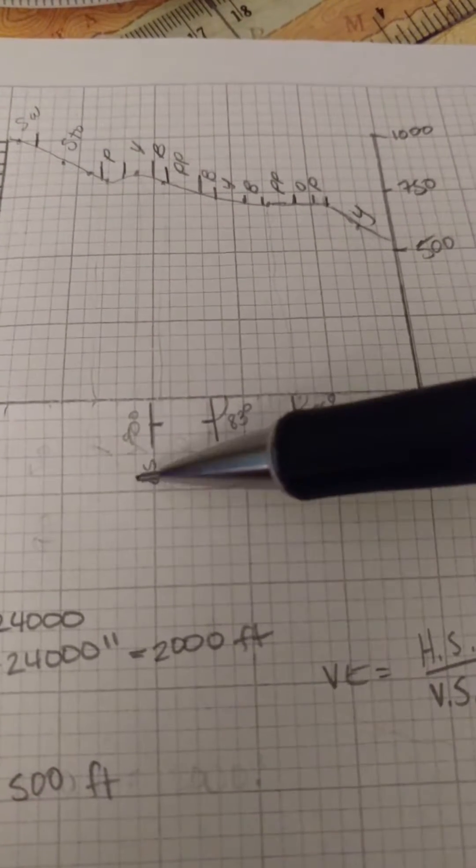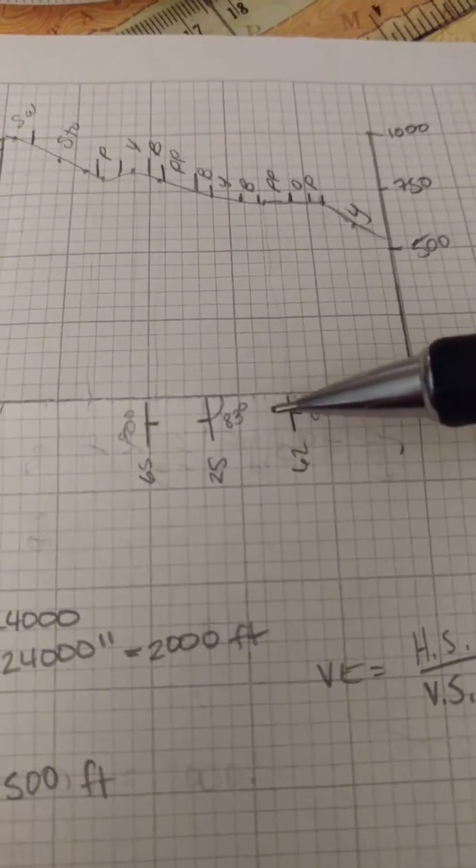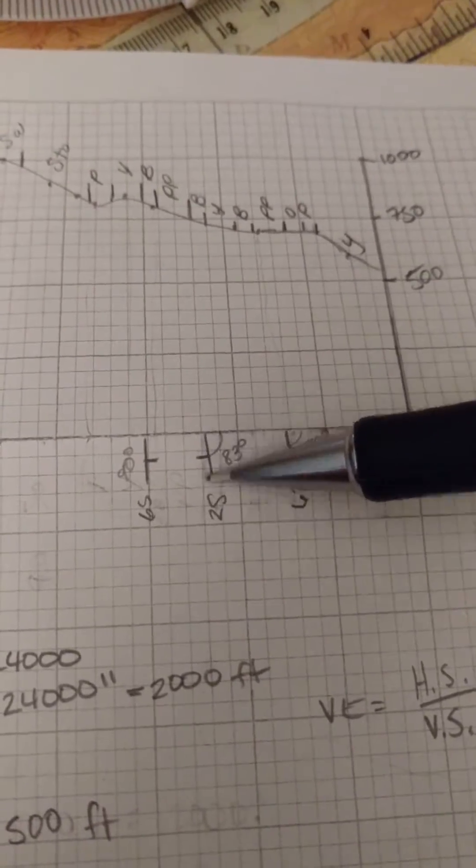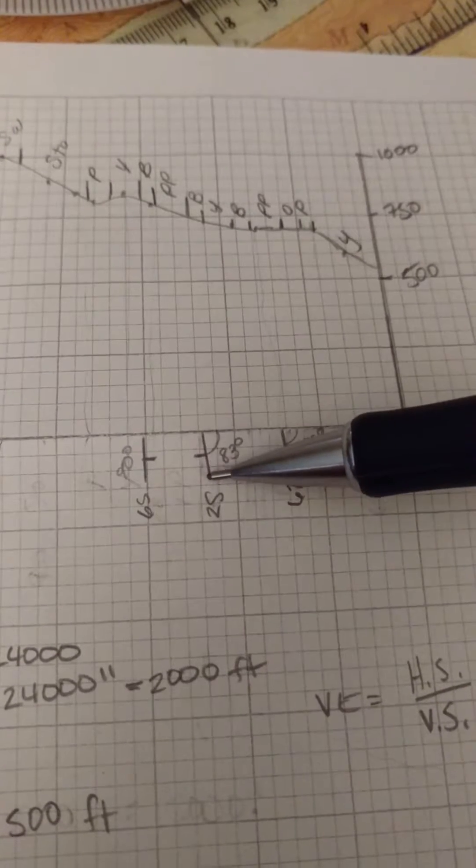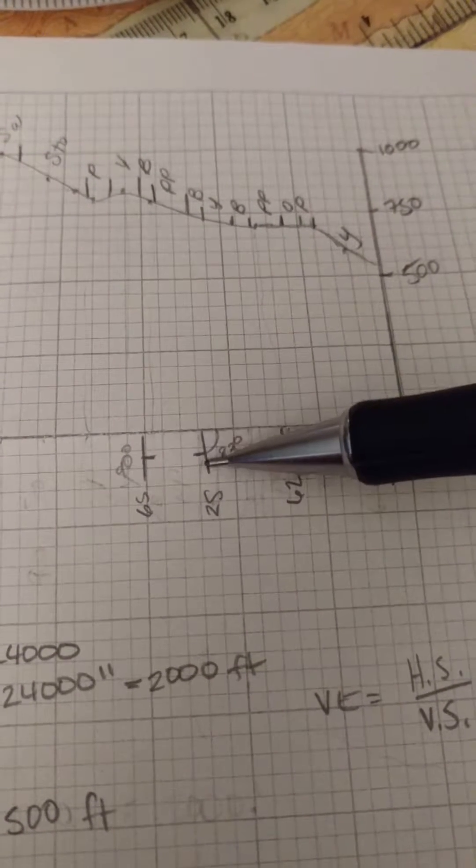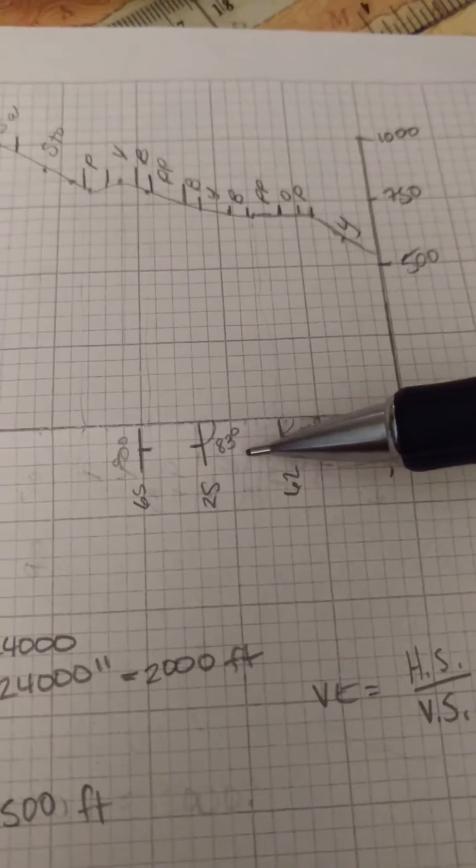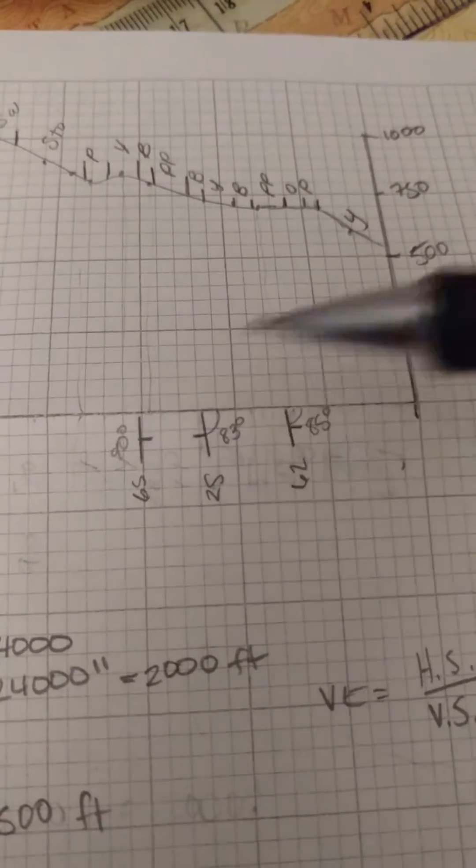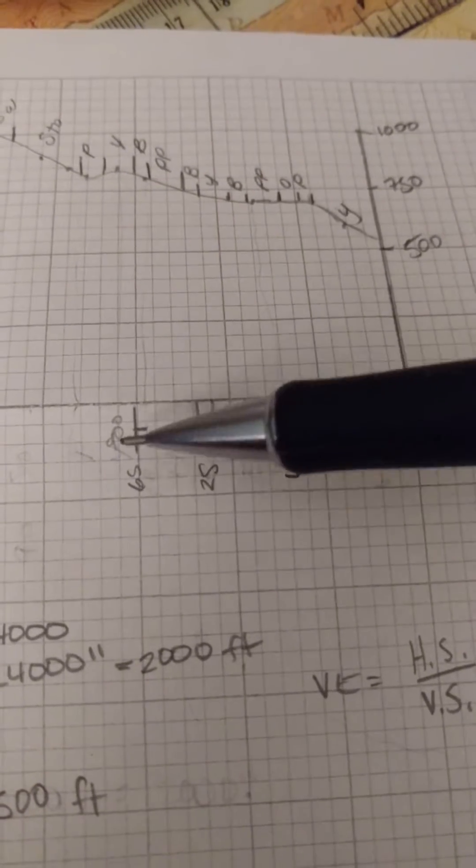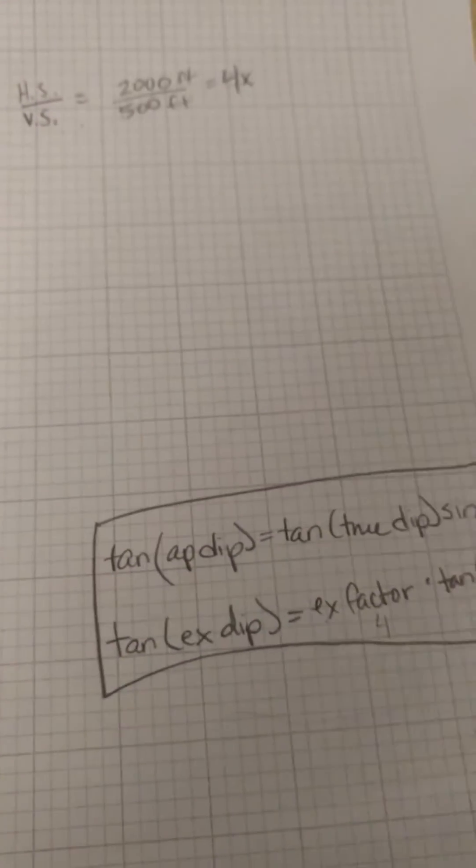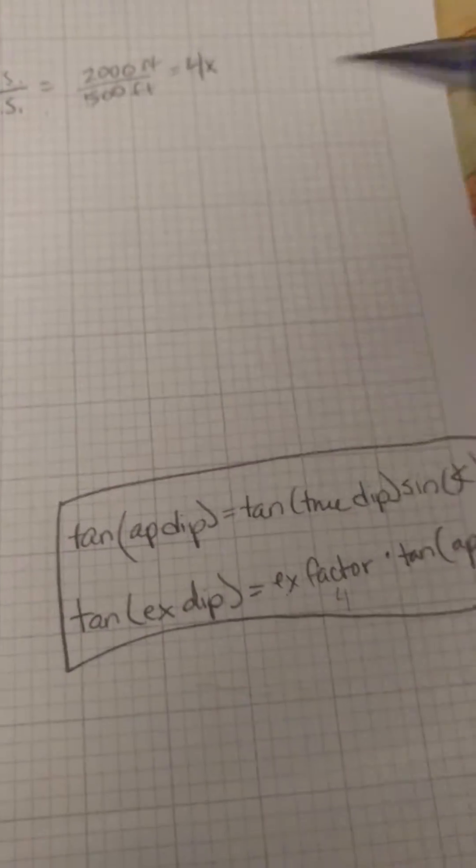These are our true dips. And then I measured with a protractor, that thing, the angle between the strike of the true dip and the profile line that I'm working with. I got 83, 85, and 90 degrees. Now if you get 90, you don't have to do anything with that. But with these 83s and 85s, we've got to apply this dip formula down here.